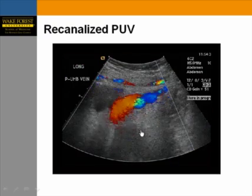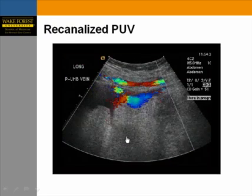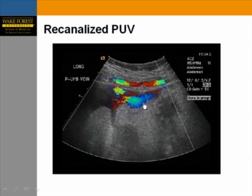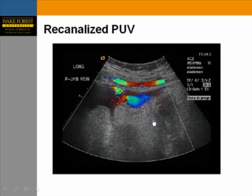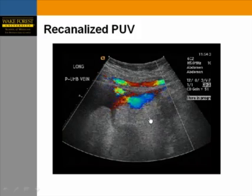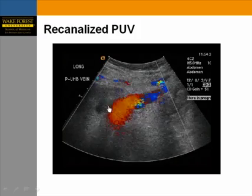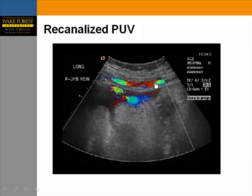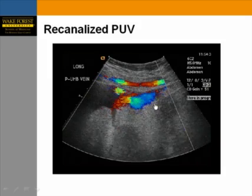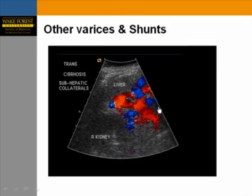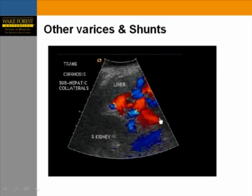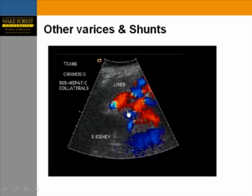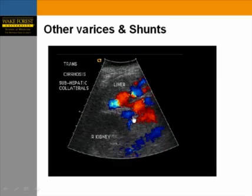This is an example of an enlarged periumbilical vein extending to the surface of the abdomen and up toward the chest. Without color Doppler, you may have trouble identifying that component in the abdominal wall. Another example shows massive sub-hepatic venous collaterals in a patient with portal hypertension and cirrhosis.